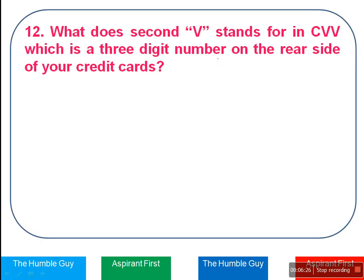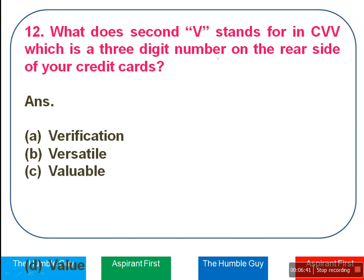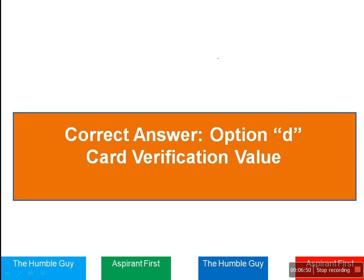Next question: What does the second 'V' stand for in CVV? If you read your credit card there will be a three-digit number — that is CVV. The options are Verification, Versatile, Valuable, or Value. The correct answer is Option D — Value. The full form of CVV is Card Verification Value. If they ask the first V, it is Verification; if they ask the second V, it is Value.